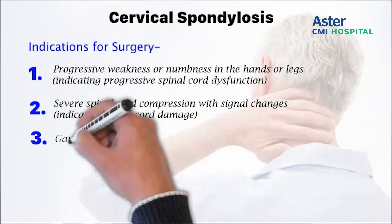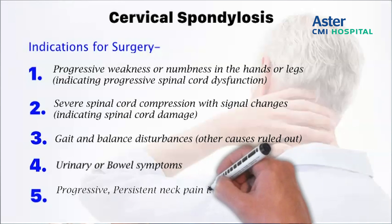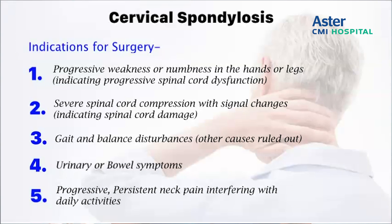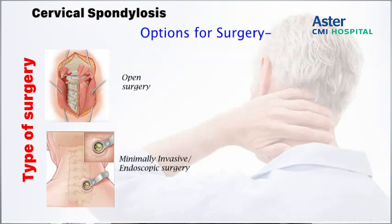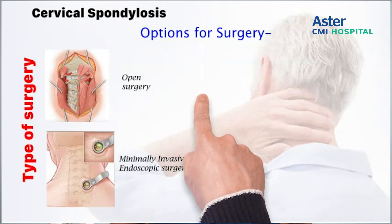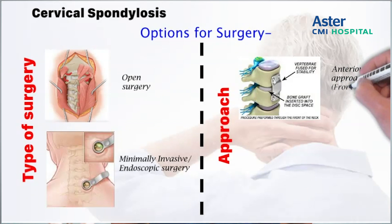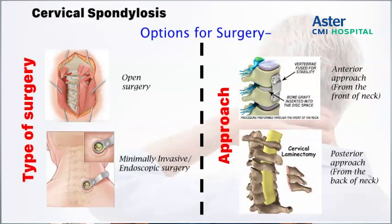These are age-related changes and as age progresses, the disease may also progress. In advanced cases, whenever there is nerve involvement, weakness, numbness, or difficulty in walking, surgical intervention will be required. There are various types of surgical intervention — either through conventional open surgery or minimally invasive spine surgery, which offers faster recovery, lesser blood loss, and quicker return to work. Surgery can be performed through an approach from the front or the back of the neck, depending on the individual case, and these decisions are taken by the treating doctor or spine specialist.